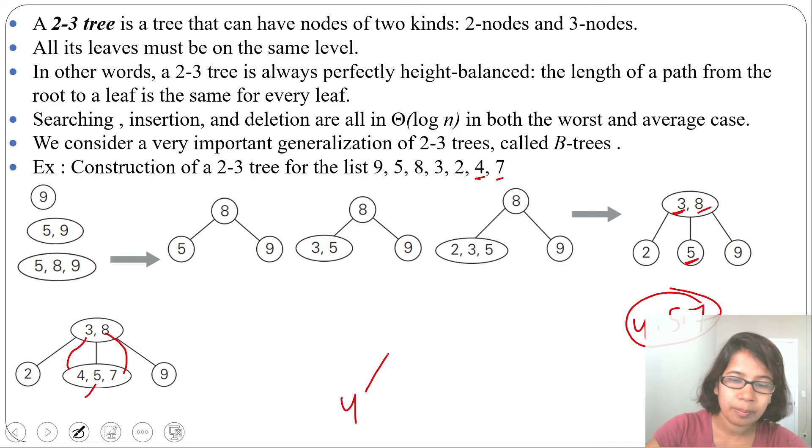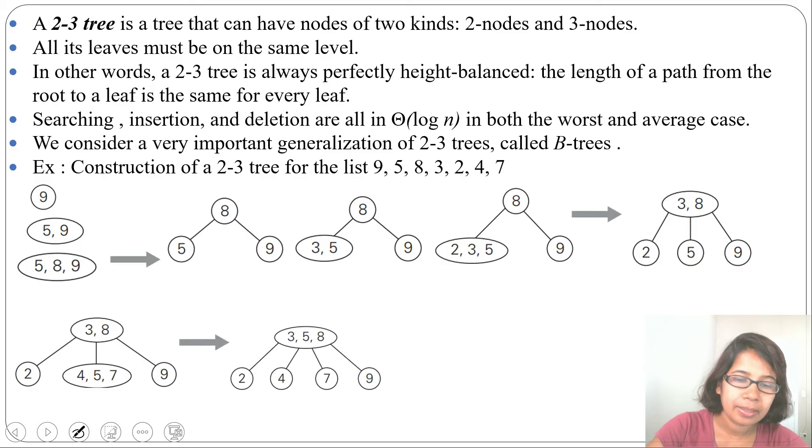So it will be 4, parent will be 5, child will be 7. We will just move this 5 with parent. Now parent will be 3, 5, 8. So first we will move 5 with parent. Now parent contains 3, 5, 8. Next again we need to split it as there are 3 nodes.